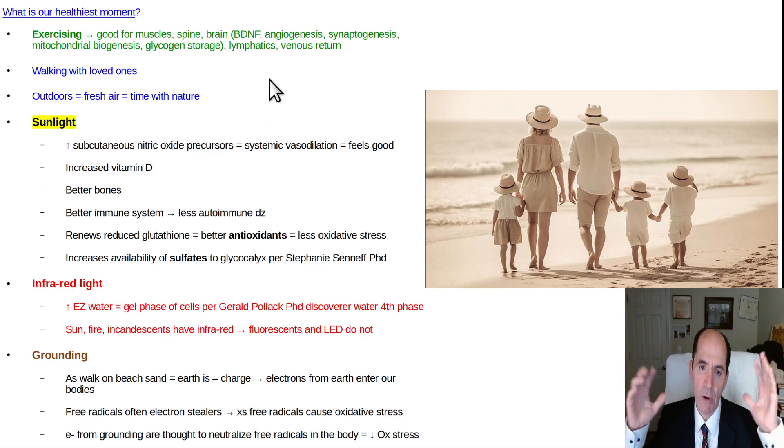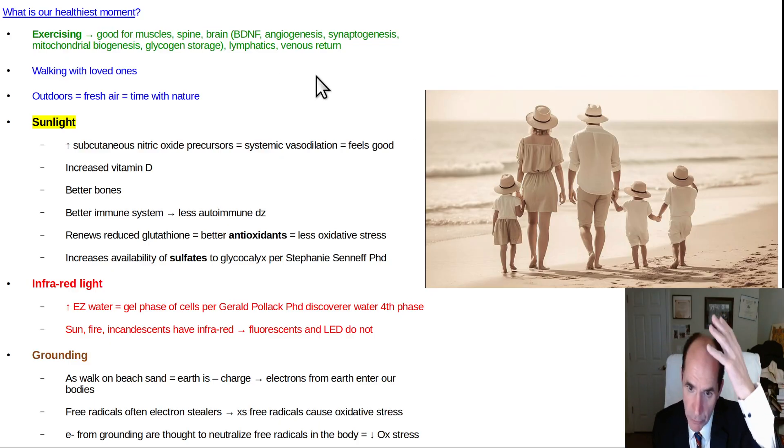Brain-derived neurotropic growth factor is released during exercise. You get increased angiogenesis, growth of new blood vessels on the surface of the brain to provide oxygen, synaptogenesis, forming new synapses, new neurons, neurogenesis.